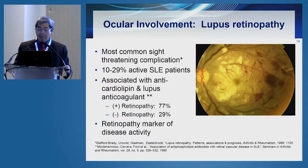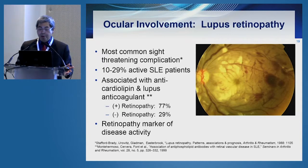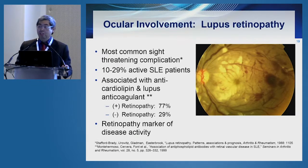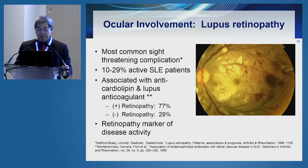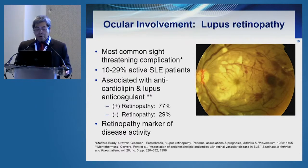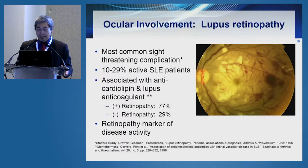Lupus retinopathy is one of the most common sight-threatening complications of lupus, and about one in four active SLE patients would develop some form of retinopathy, whether mild or severe. It's also important to know that lupus retinopathy is highly associated with production of anti-cardiolipin antibodies and lupus anticoagulants. If you have retinopathy, three-quarters of patients would exhibit these antibodies, whereas without retinopathy, fewer patients show these autoantibodies.